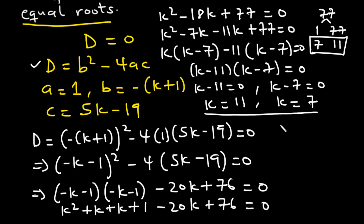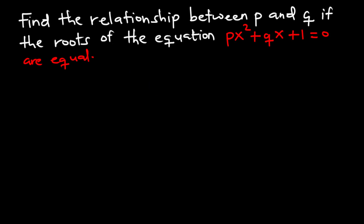Let's solve the next question. For the second question, we have to find the relationship between P and Q if the roots of the equation Px squared plus Qx plus 1 equals 0 are equal.